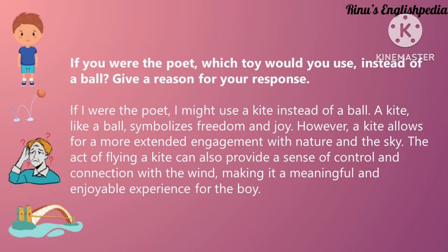The next question asks: if you were the poet, which toy would you use instead of a ball, and why? You could give the example of a kite. A kite symbolizes freedom and joy, and at the same time it allows for an extended engagement with nature and the sky — a connection with the sky and nature is also included. When we fly a kite, we are in control of it; we can connect with the wind and fly it very high, making it a meaningful and enjoyable experience for the boy in the poem.